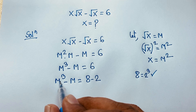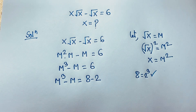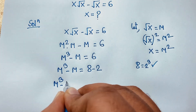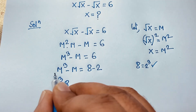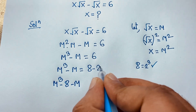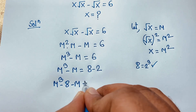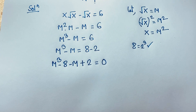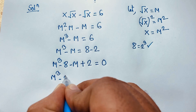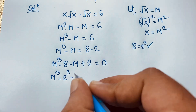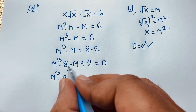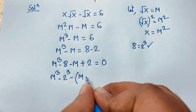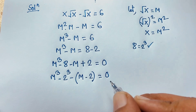So we have m³ on the left. Applying this, we rewrite: m³ minus 8, moving the positive 8 to this side gives negative 8, minus m, and moving the negative 2 to this side gives positive 2, all equal to 0.